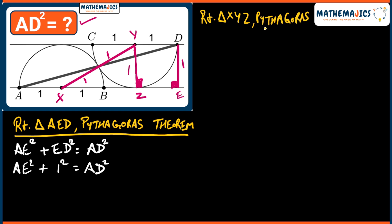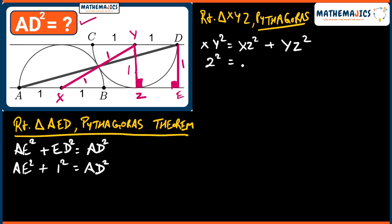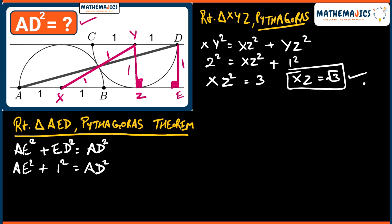Pythagoras is very useful in so many geometry questions. Applying it to triangle XYZ: XY² = XZ² + YZ², where XY is the hypotenuse. XY equals 1 + 1 = 2, so XY² = 4. YZ is the radius = 1, so YZ² = 1. Solving: XZ² = 4 − 1 = 3, therefore XZ = √3.